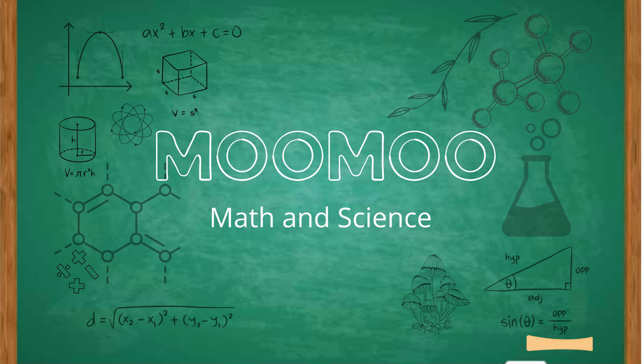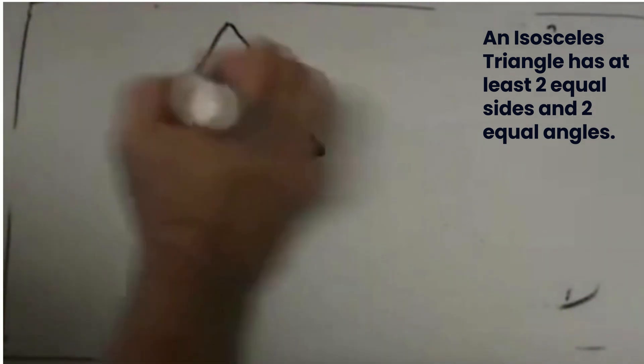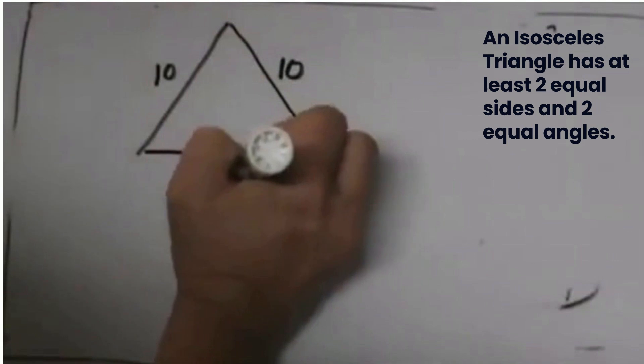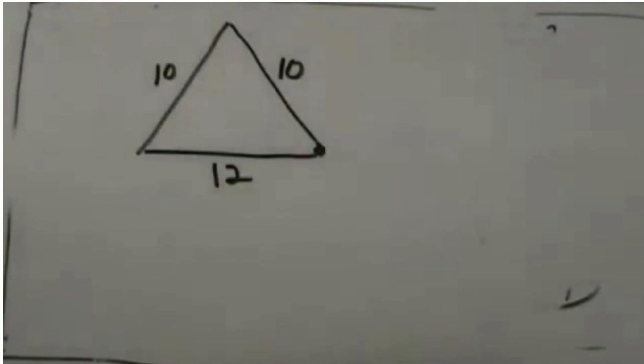The area of an isosceles triangle. We have two sides that are 10 and one side that is 12. We need to find the area of the triangle.